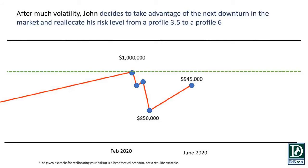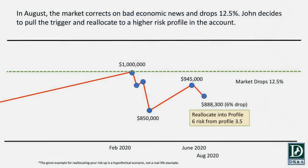John is thinking: if we're going to have this correction, he'll do the risk-up strategy. On the downturn, we're going to reallocate his risk level from his current 3.5 profile to a profile 6 — ratcheting up in this strategy. Then in August, the market corrects and bad economic news looms.